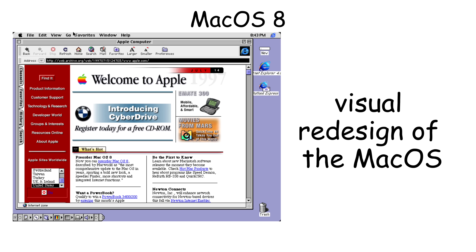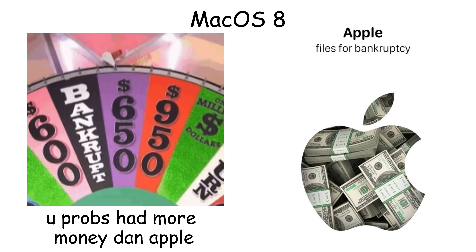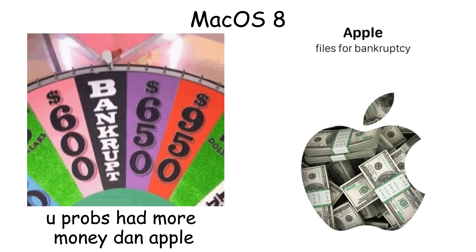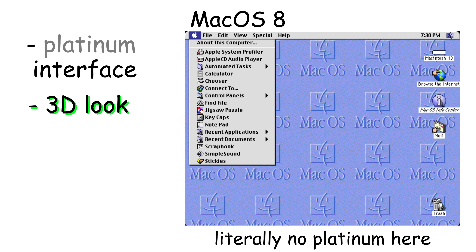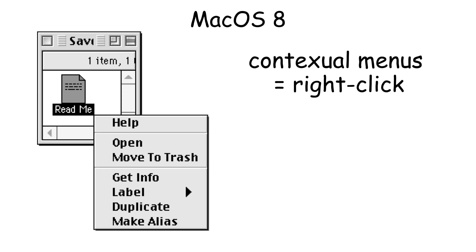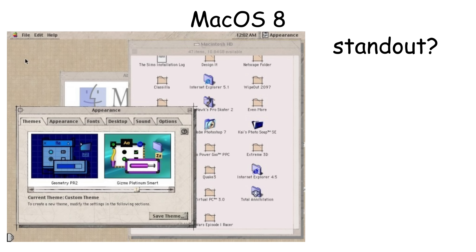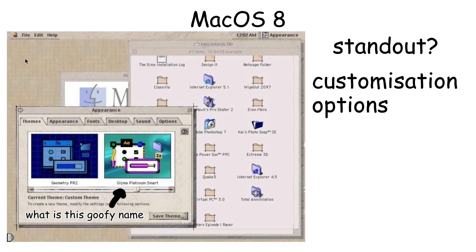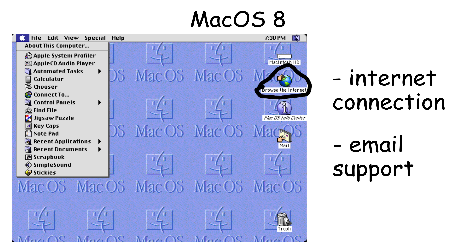Mac OS 8 was released in 1997 and brought a major visual redesign to the Mac operating system. It was created during a critical time when Apple was struggling financially and needed to modernize its software. Mac OS 8 introduced the Platinum interface, which featured a three-dimensional look with shaded buttons and redesigned windows. It also added contextual menus, allowing users to right-click on files for quick options. Mac OS 8 also improved internet connectivity with better web browsing and built-in email support.